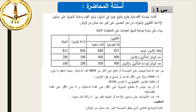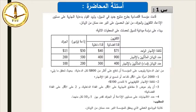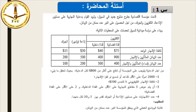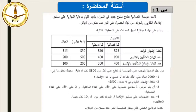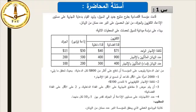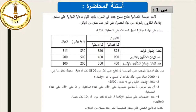أسئلة المحاضرة: السؤال الأول: قامت مؤسسة اقتصادية بطرح منتج جديد في السوق وتريد القيام بدعاية إشهارية على مستوى الإذاعة والتلفزيون والجرائد من أجل الحصول على أكبر عدد ممكن من الزبائن. بناءً على دراسة ميدانية للسوق، يجب على المؤسسة ألا تدفع أكثر من 800 دولار للدعاية، وأن تحقق 2000 امرأة على الأقل مشاهدة الإشهار، وألا تتعدى تكلفة الإشهار التلفزيوني 500 دولار، مع عرض 3 مقاطع إشهارية على القناة الداخلية و2 على الفضائية.